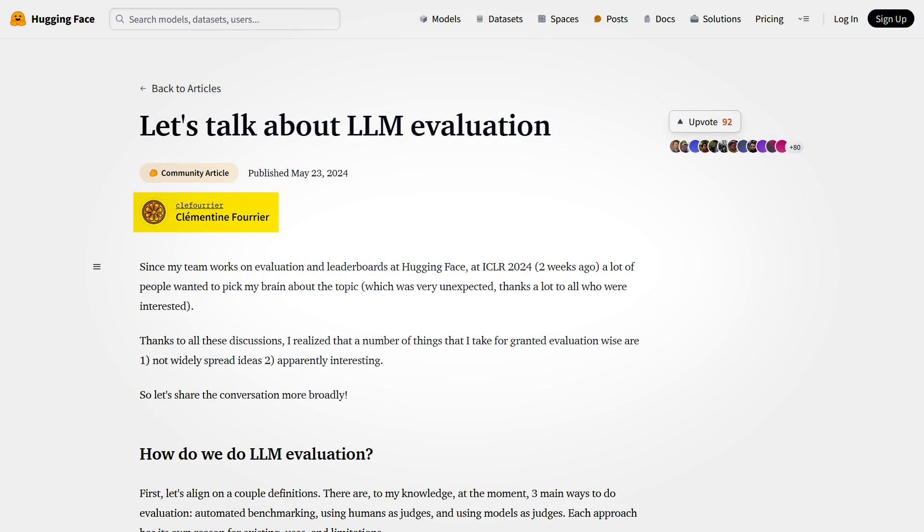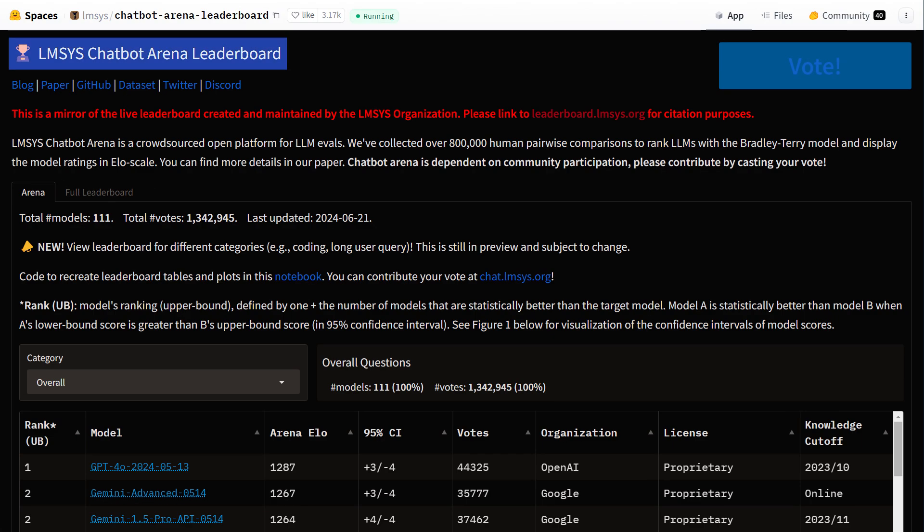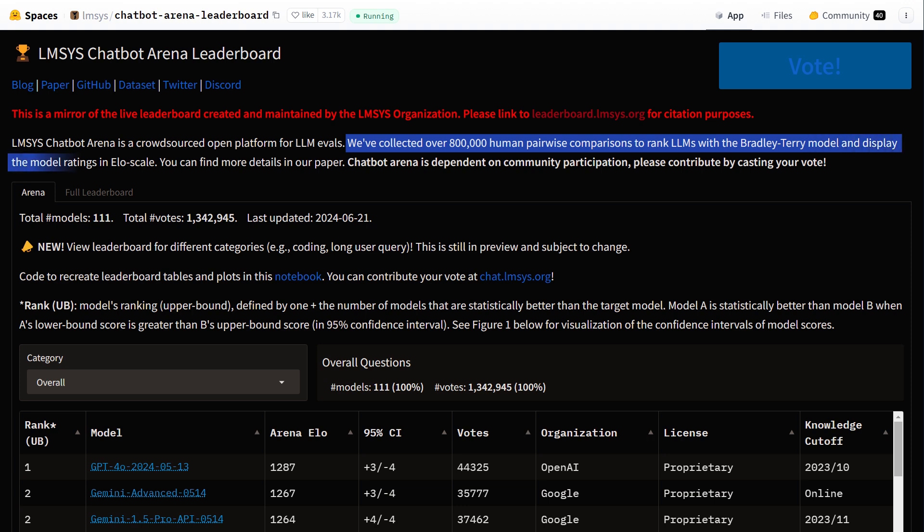However, as shared in a great blog post by Clémentine Fourrier on Hugging Face, this approach is very susceptible to confirmation bias, where evaluators tend to find what they are looking for. Another one is Community Arenas, which allows people to vote and give feedback on various models, offering a wide range of opinions and insights. People from the community simply chat with the models until they find that one is better than the others. It's quite subjective.